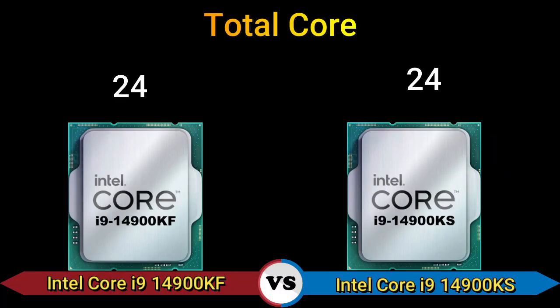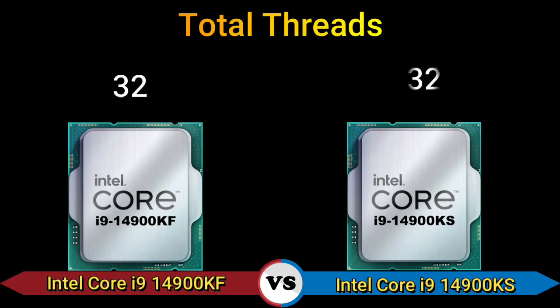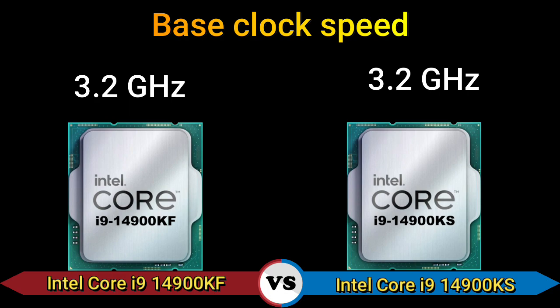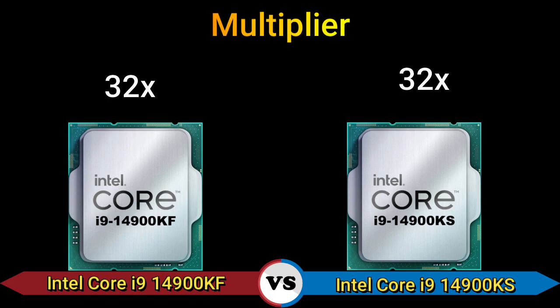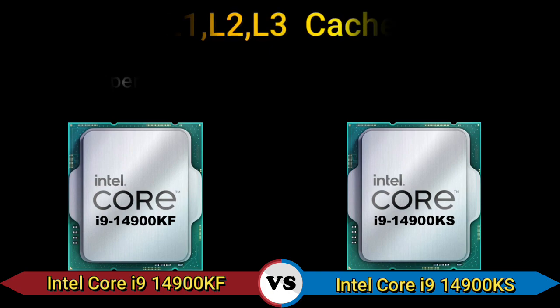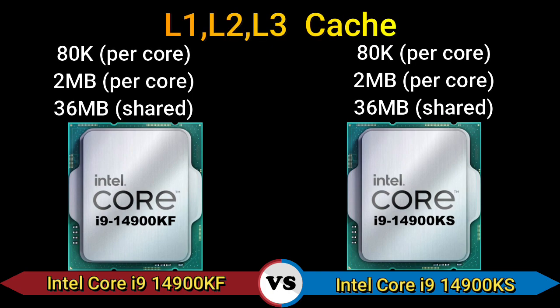Total cores: 24. Total threads: 32. Base clock speed: 3.2 GHz. Boost clock speed: 5.8 GHz and 5.9 GHz. Multiplier: 32x. L1/L2/L3 cache: 80K per core, 2MB per core, and 36MB shared.